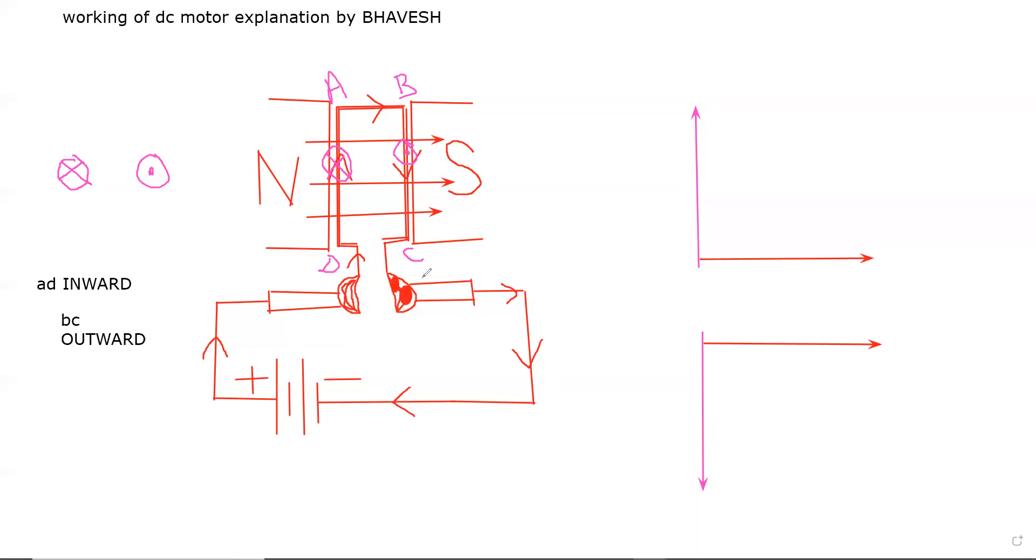This will rotate. After rotation, AD becomes BC and BC becomes AD, so it will continue to rotate. This is why our armature rotates and the motor works.